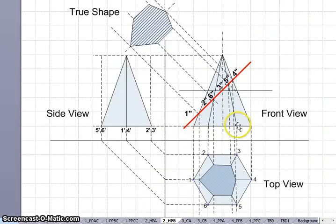So now if you look at here, so this is the hexagon pyramid top view here. I have numbered all the sides one, two, three, four, five and six.